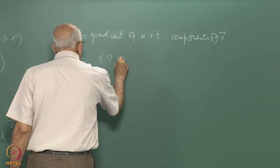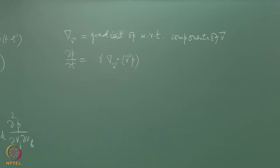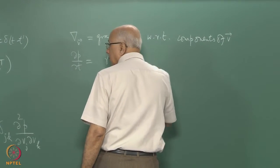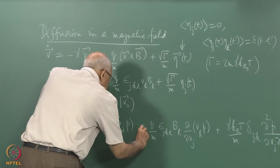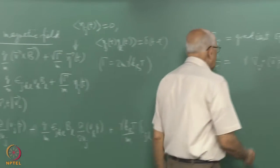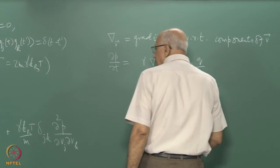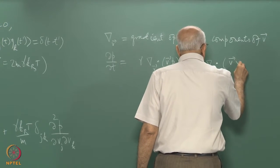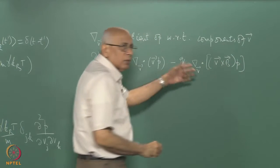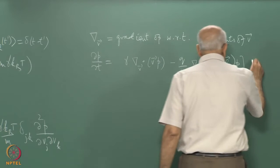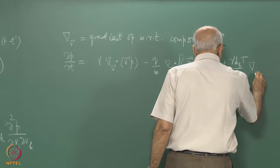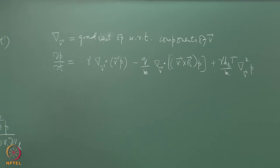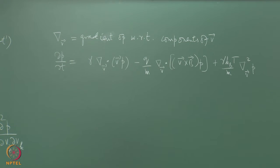In vector form, ∂P/∂t equals gamma ∇_V · (VP) minus (q/m) ∇_V · (V × B · P) plus (gamma k_B T / m) ∇_V² P. The drift comes with a minus sign. We can also write the middle term as (V × B) · ∇_V P. That is the Fokker-Planck equation; the task is to solve it subject to the delta-function initial condition.